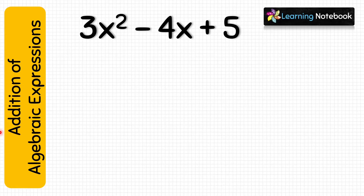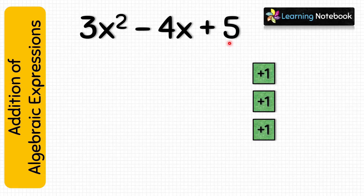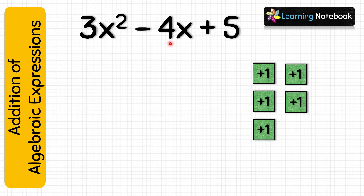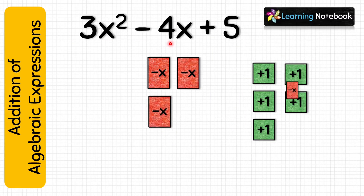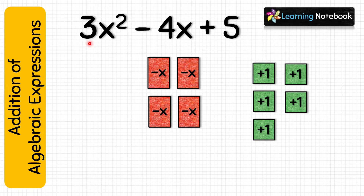First, let's represent term 5 by putting 5 green small squares. Next, represent term minus 4x — for this, we will put 4 red rectangles. And then, we will represent term 3x square using 3 green big squares.